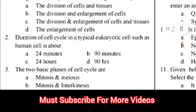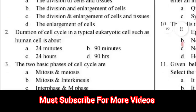Question number 2: Duration of cell cycle in a typical eukaryotic cell such as a human cell is about? Options: 24 minutes, 90 minutes, 24 hours, 90 hours. The correct answer for question number 2 is option C — 24 hours.